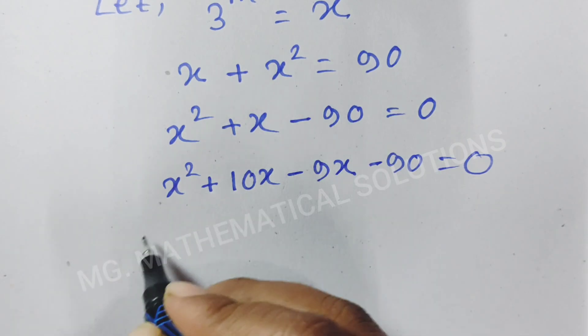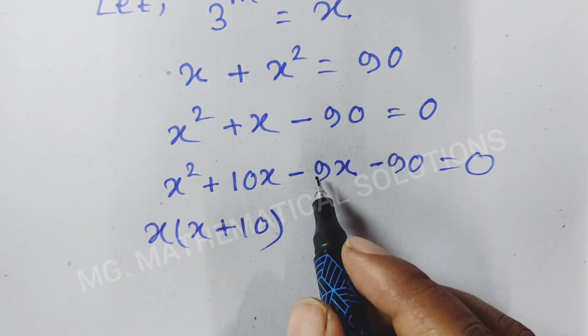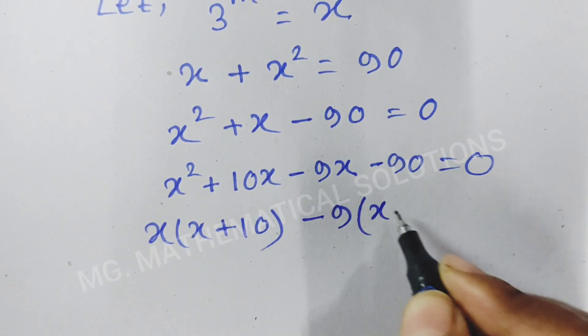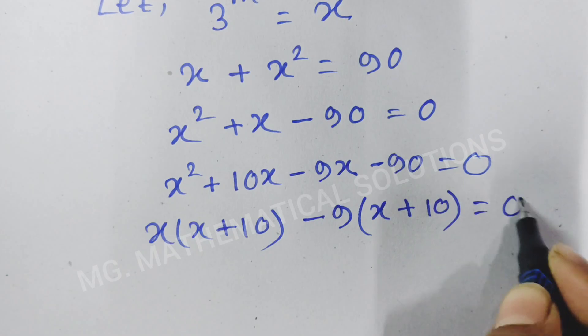Now, we take common x so x plus 10, here we take common minus 9 so x plus 10 times 9 that means 90 equal to 0.